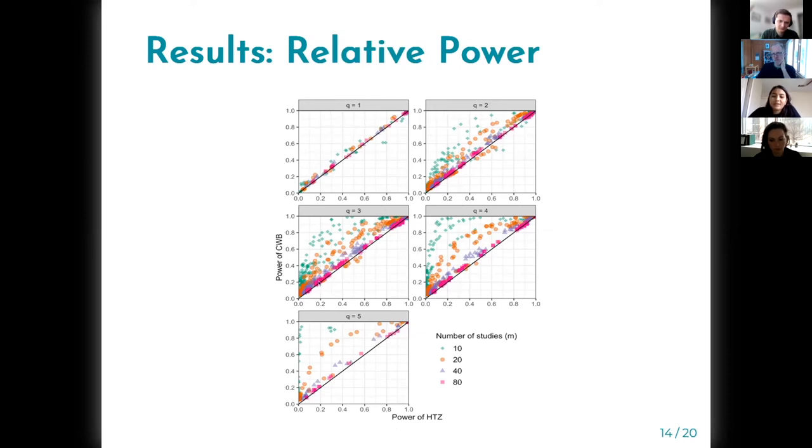The diagonal line: if dots are above the diagonal line it means that CWB had a higher power than the HTZ test, and in most conditions that's the case. Especially for tests of higher contrast with small number of studies, it has way higher power than HTZ.